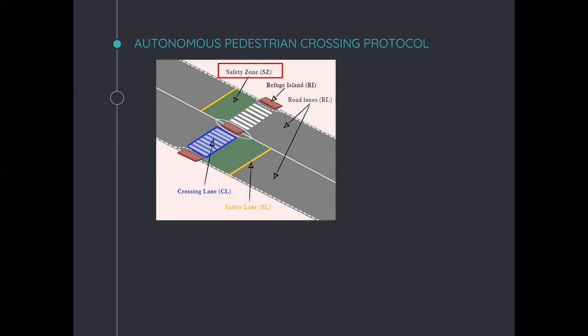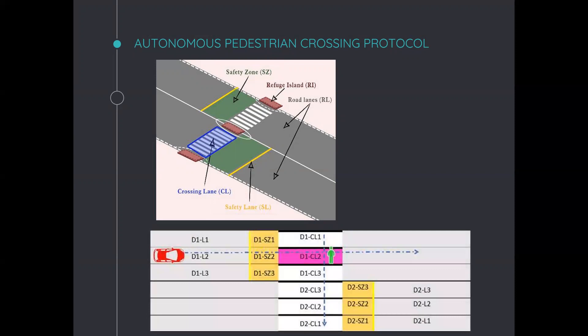For example, in this scenario, the red vehicle is concerned only with the collision region, which is the safety zone of direction one lane two or D1-SZ2 plus the crossing part D1-CL2. Accordingly, an approaching vehicle will sense this particular area by reading input from its front camera or it will analyze the received cooperative awareness message in case it is occluded by another vehicle. And it will, in this case, optimize its decision in order to minimize the traveling delay.